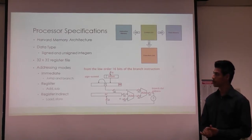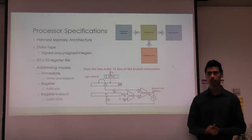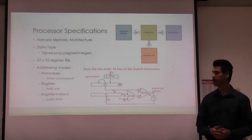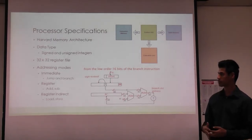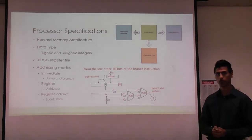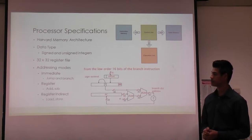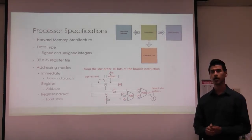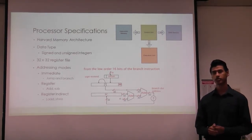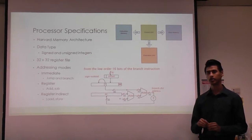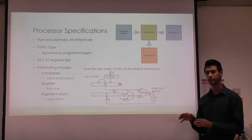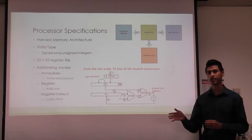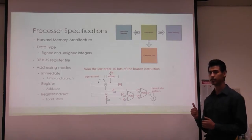Register addressing is when we obtain the operands straight from the register file, such as add, subtract, or any R-type instruction. Register indirect is used for load and store — the register contains a pointer to the actual data located in memory.